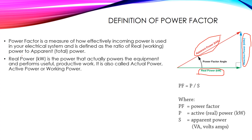Real power, measured in kilowatts, is the power that actually powers the equipment — the kind of power which performs useful work. It is called the actual power, active power, or working power. As an example, this is the power that produces the mechanical power inside electric motors. The mechanical movement produced is considered useful power, and it comes from the real or active power.